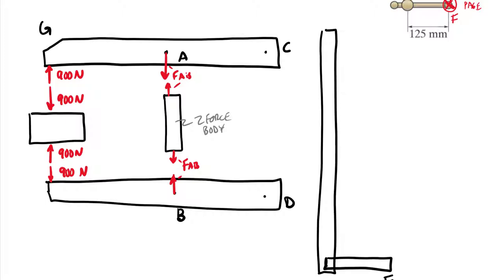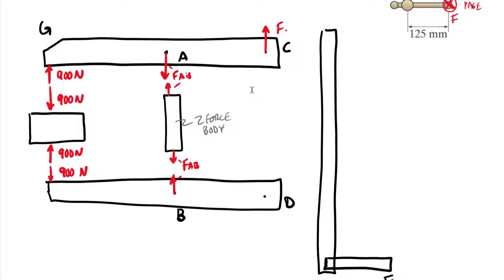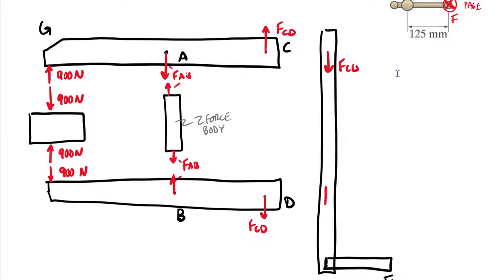We're going to sum our moments around point A. If we end up with a negative moment from the 900 Newton force by the right hand rule, we'll need a positive moment at point C, so the force at C goes upwards — we call this F_CD. Due to symmetry, we get the same force F_CD at the bottom. Equal and opposite: the force of the arm on the screw is downward F_CD at C, and upward F_CD below.